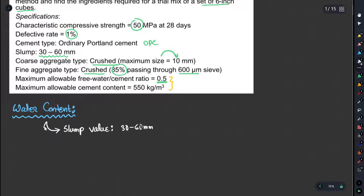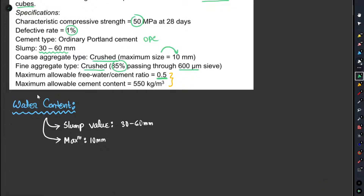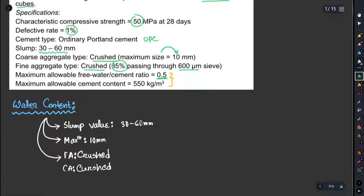From the slump table, we look at the maximum aggregate size. The maximum aggregate size is 10 mm. We need to check what type of aggregate we have — fine or coarse. We also check whether the fine aggregate and coarse aggregate are crushed or uncrushed.